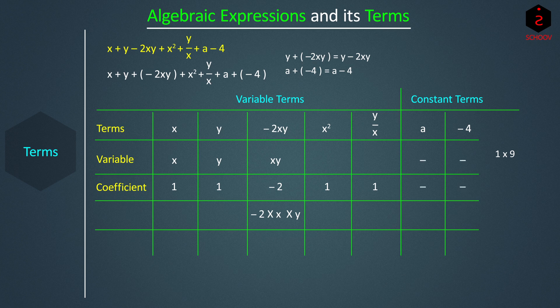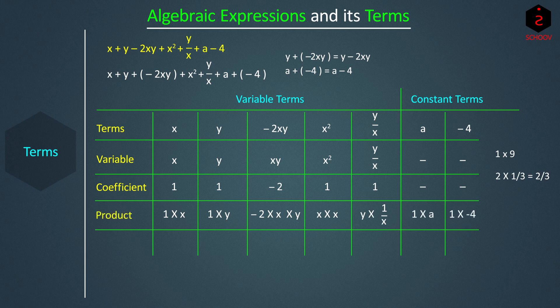Now, just as −2, X, and Y are multiplied to form the product −2XY, X and X are multiplied to form X². 1 and X form X, and 1 and Y form Y. In Y/X, Y is divided by X — but we can also say that Y is multiplied by 1/X, the same way 2 × (1/3) = 2/3. So these are all products. When there are products, there are factors. For example, 6 × 3 = 18, so 6 and 3 are factors of 18.